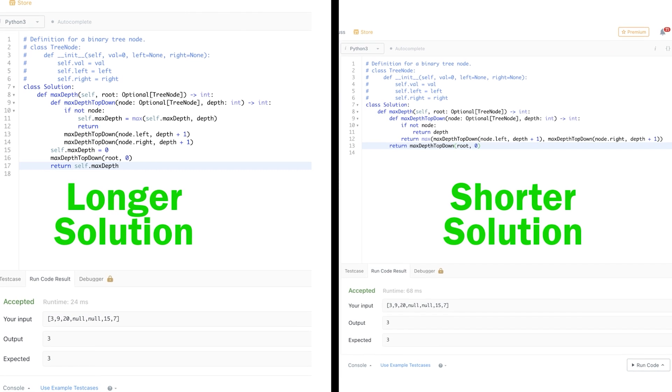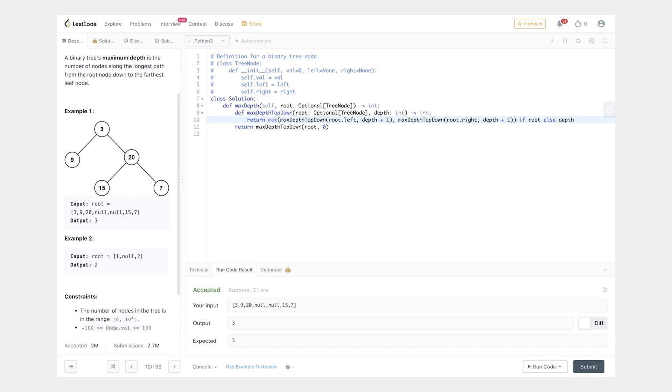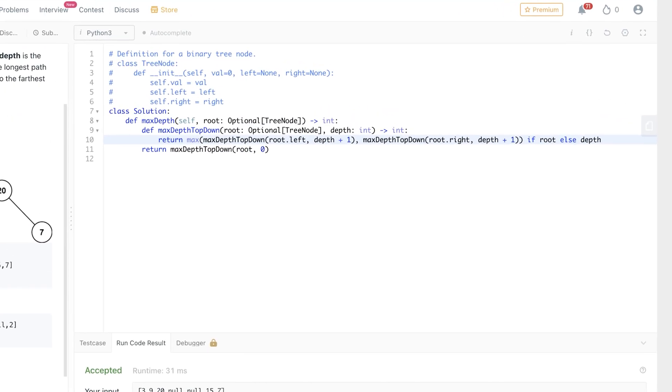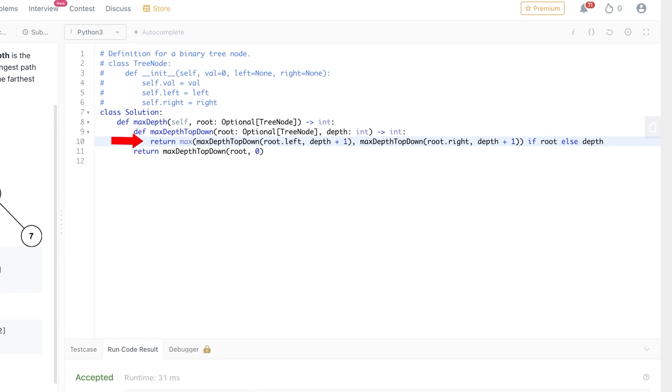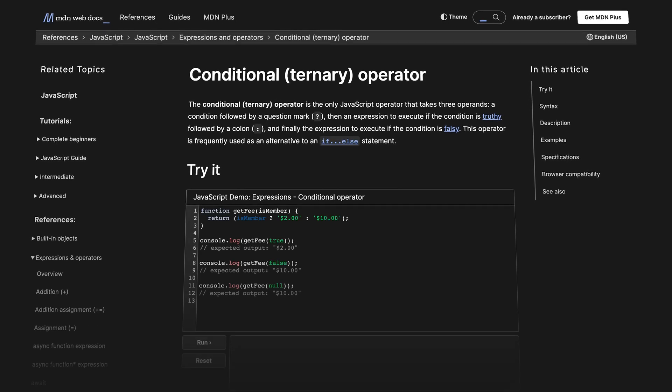I hope that you can see that our solution is getting shorter. If you want to write this max depth top down function in just one line, you can do it by using if else like this in Python. For Java and C++, you can do it by using ternary operators. So we are at three lines now. How do we make it even shorter and simpler?